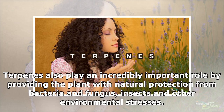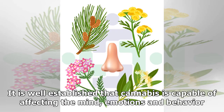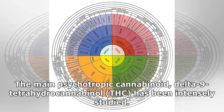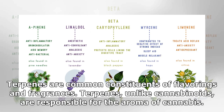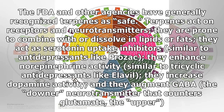Terpenes play an incredibly important role by providing the plant with natural protection from bacteria, fungus, insects, and other environmental stresses. It is well established that cannabis is capable of affecting the mind, emotions, and behavior. The main psychotropic cannabinoid, delta-9 tetrahydrocannabinol (THC), has been intensely studied; however, many other cannabinoids, terpenoids, and flavonoids found in medical marijuana that play a big role in boosting the therapeutic effect remain understudied. Terpenes are common constituents of flavorings and fragrances and are responsible for the aroma of cannabis.